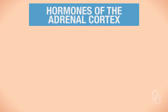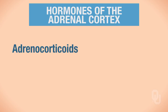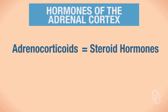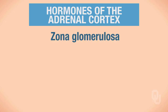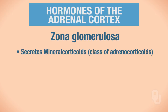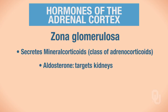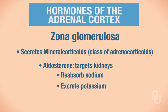The hormones synthesized and secreted by the adrenal cortex are called adrenocorticoids, and all of them are steroid hormones. The zona glomerulosa secretes a class of adrenocorticoids called mineralocorticoids. For example, aldosterone is a mineralocorticoid secreted from the zona glomerulosa. When aldosterone is synthesized and secreted, it targets the kidneys, telling them to reabsorb sodium and to excrete potassium.